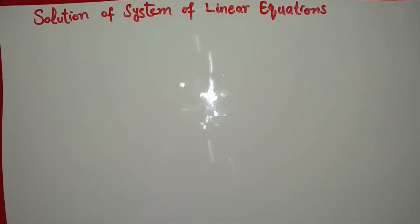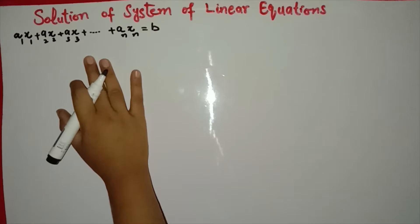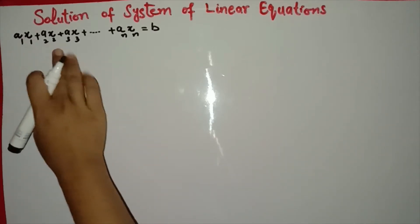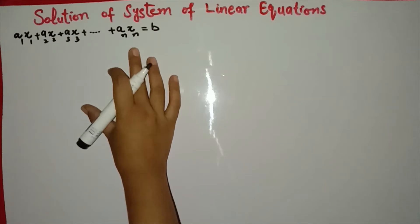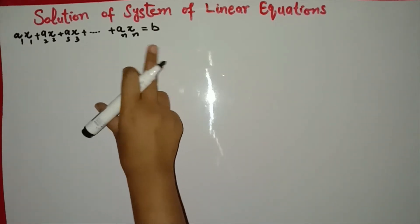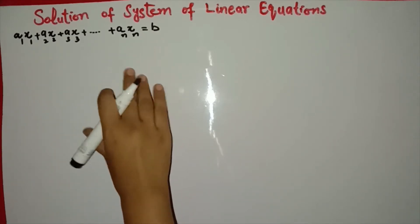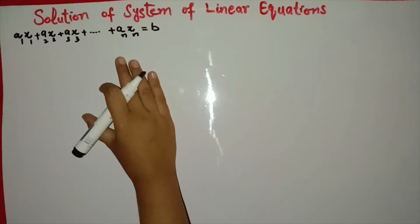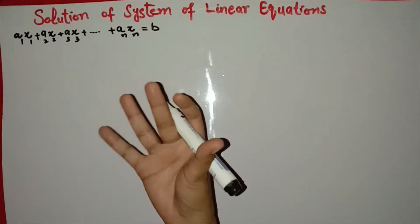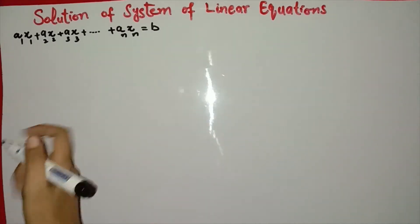First of all, what is a linear equation? This is a linear equation — this is the general form of a linear equation. Here we have variables and unknowns. A1, A2, A3, up to AN, and B are constant coefficients. If we have a collection of linear equations, then we get a system of linear equations.